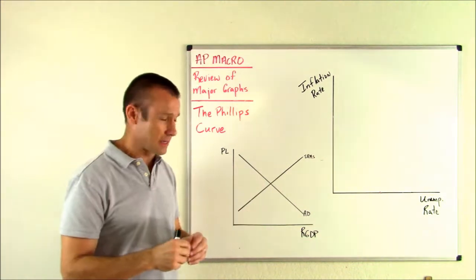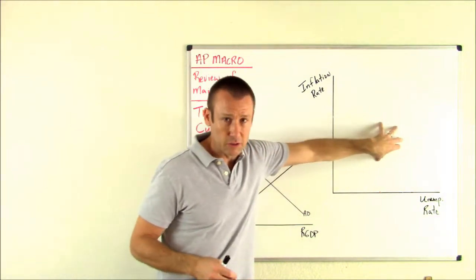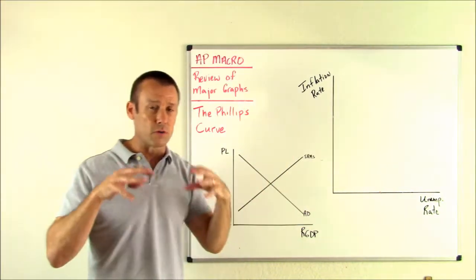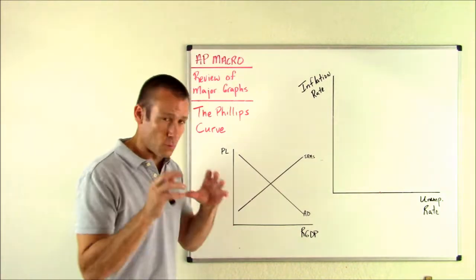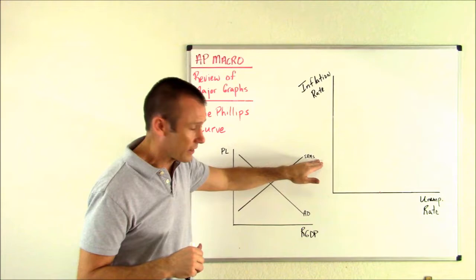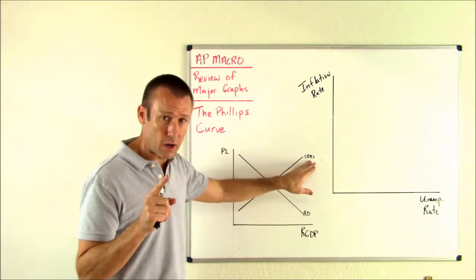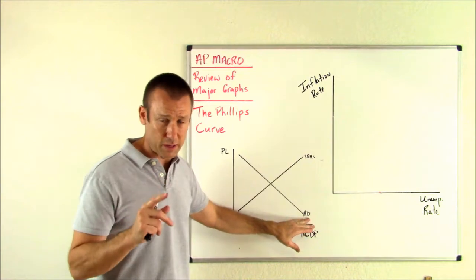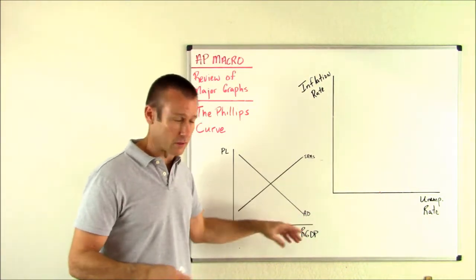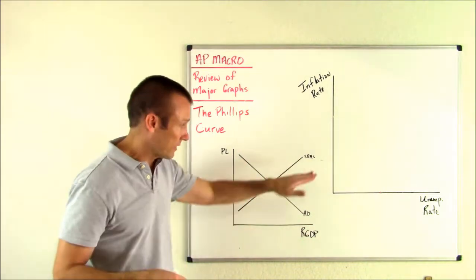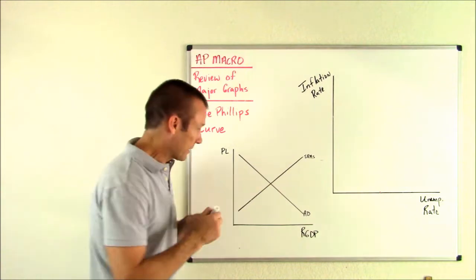In the short run, what is more unstable — the SRAS curve or the AD curve? That is, the short-run total production curve or our total spending curve. Total spending is more unstable — AD shifts more than SRAS. Yes, SRAS can shift, but AD is far more unstable.